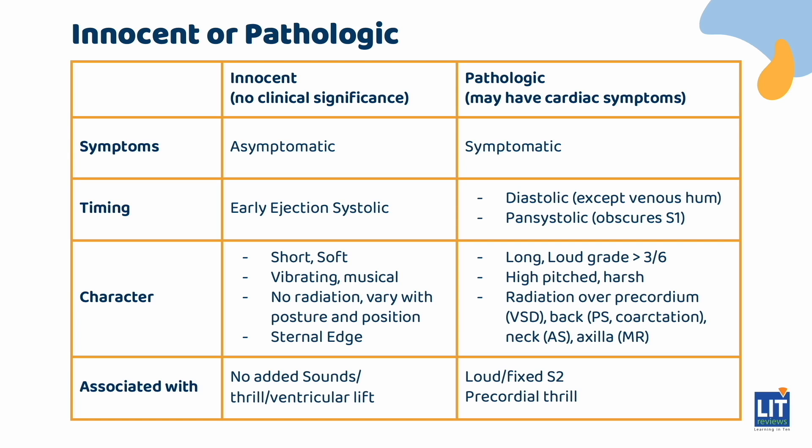Innocent murmurs are typically early ejection systolic, soft, short, at the sternal edge and without added sounds. All diastolic murmurs, except the venous hum, are pathologic, as are all pansystolic murmurs obscuring S1. Other features suggestive of pathology include loud murmurs more than grade 3 over 6, continuous murmurs, and murmurs with other associated cardiac abnormalities such as thrills, added sounds, and abnormal pulses.